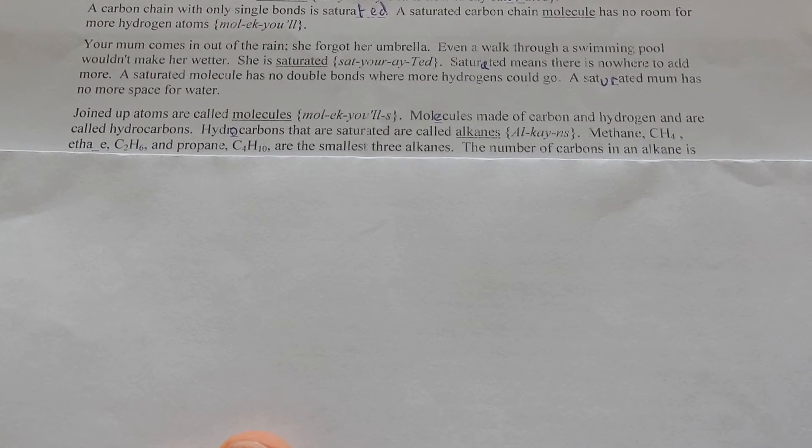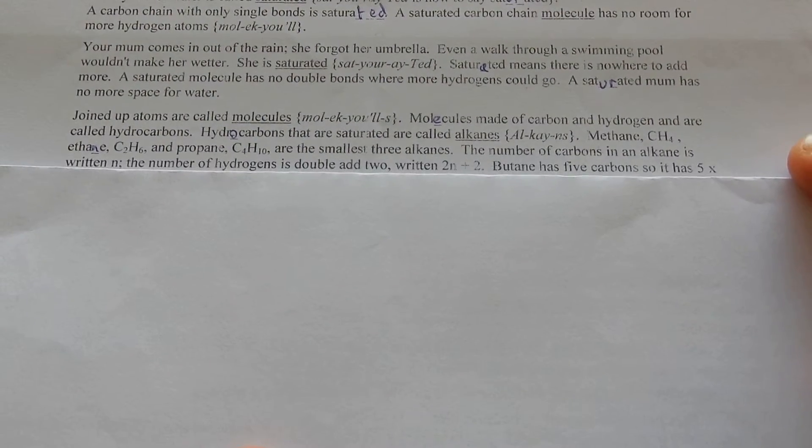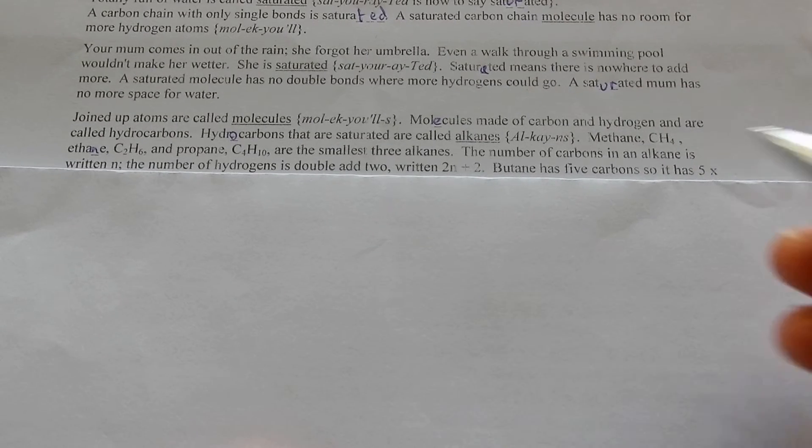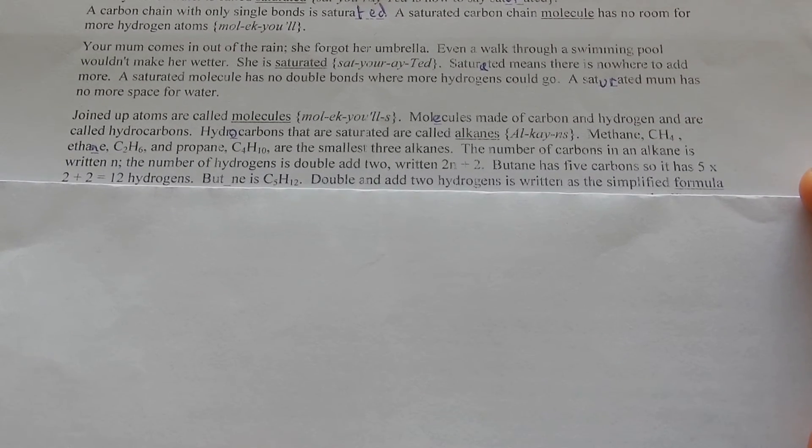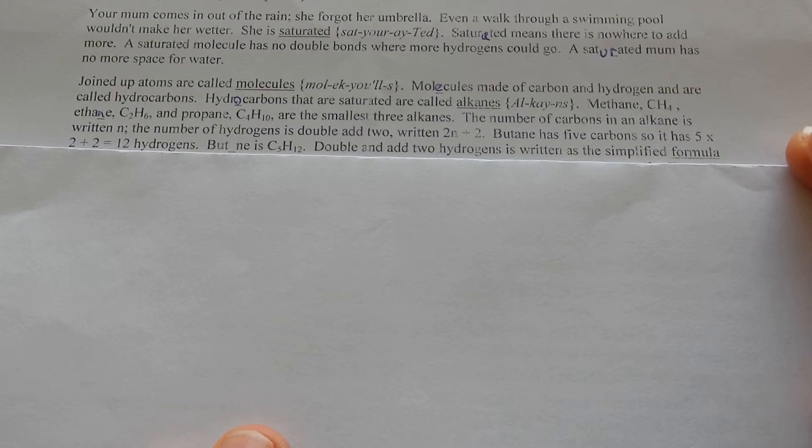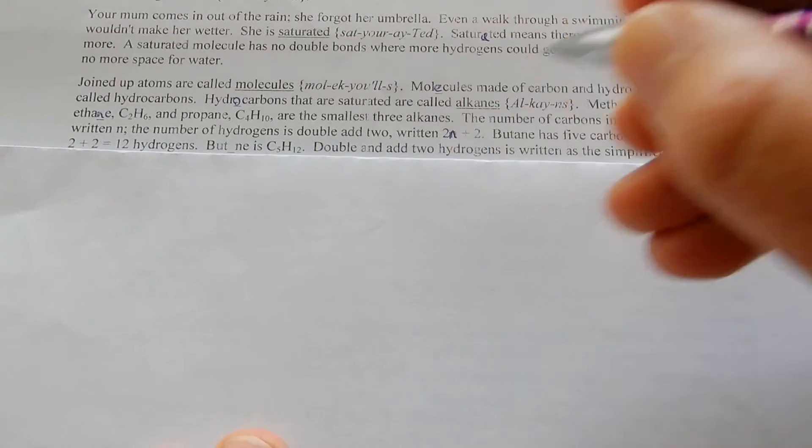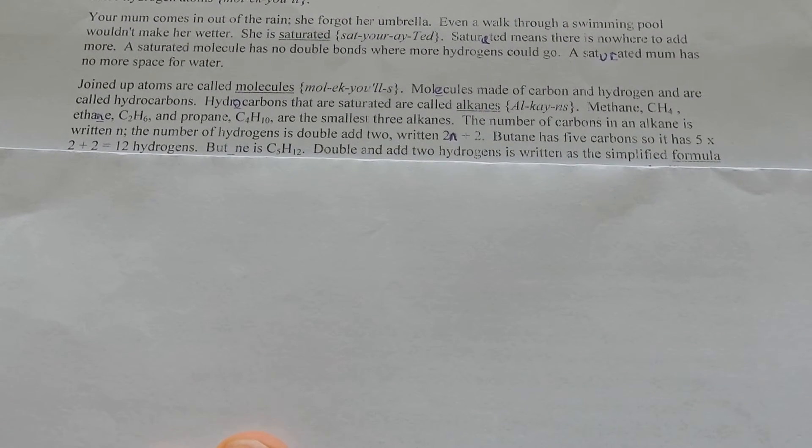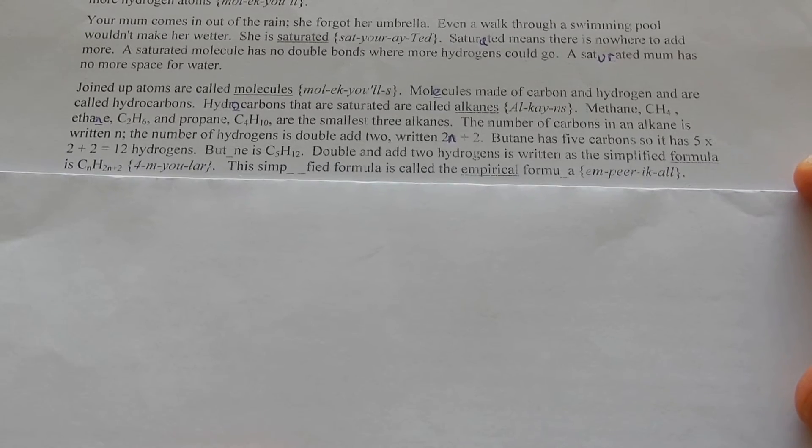Methane, ethane, propane and butane are the smallest three alkanes. The number of carbons in an alkane is written N. The number of hydrogens is double and two, written 2N plus 2. Butane has five carbons, so it is 5 times 2 plus 2 equals 12 hydrogens.